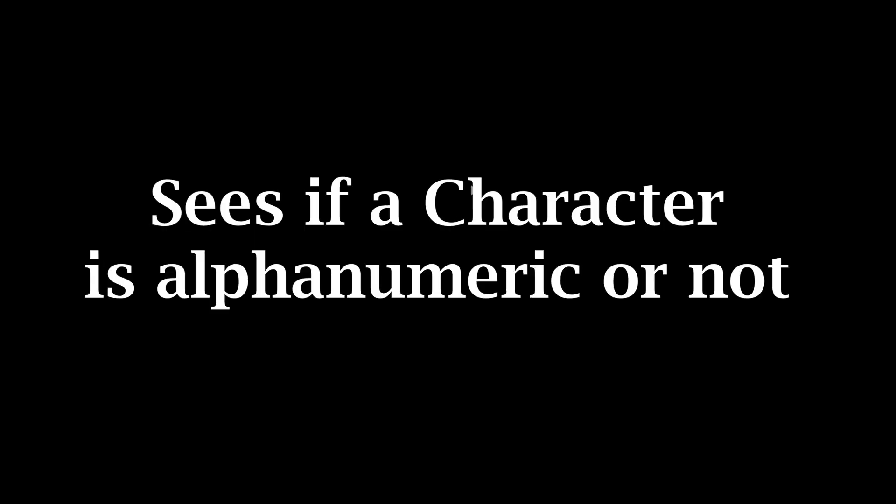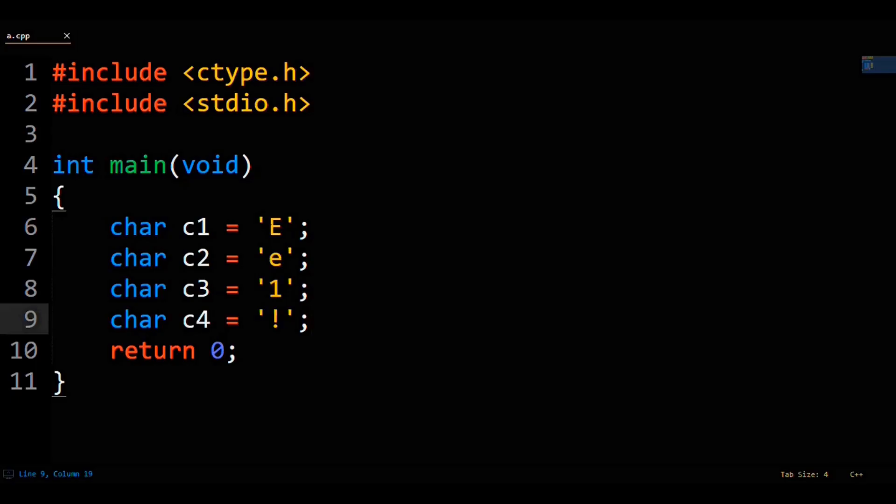IsAlNum in C++ sees if a character is alphanumeric or not. You have four characters: a capital E, a lowercase e, the digit 1, and an exclamation point.